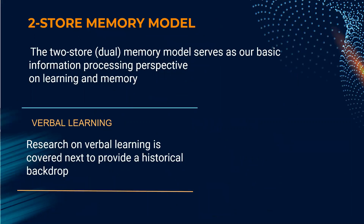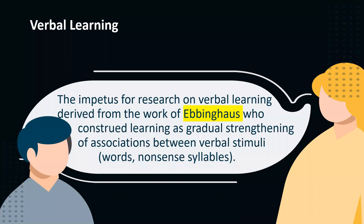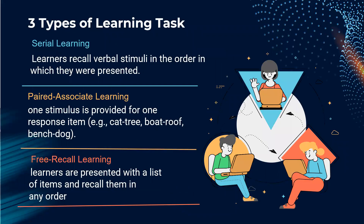Under the information processing system, we have the two-store memory model, which serves as our basic information processing perspective on learning and memory. Research on verbal learning is covered to provide a historical backdrop. This is the known work of Ebbinghaus, who construed learning as a gradual strengthening of associations between verbal stimuli — these are words or nonsense syllables.